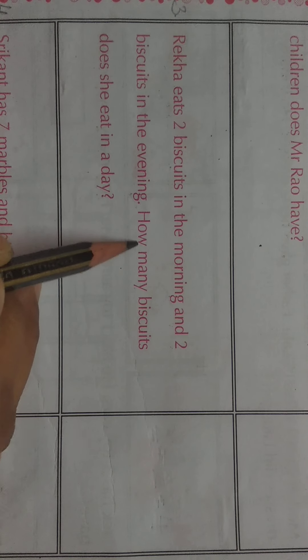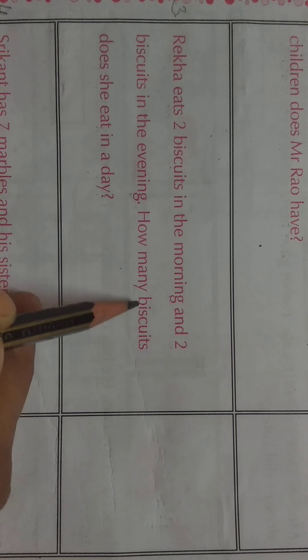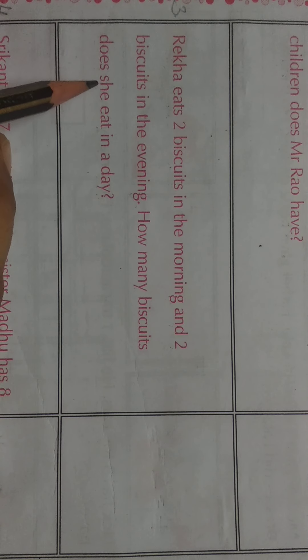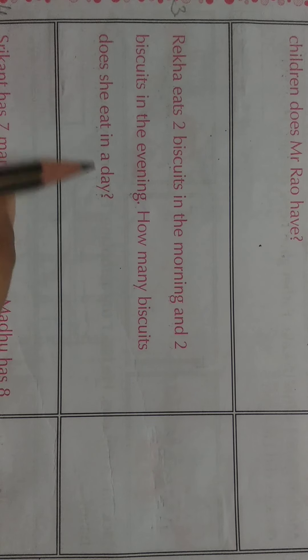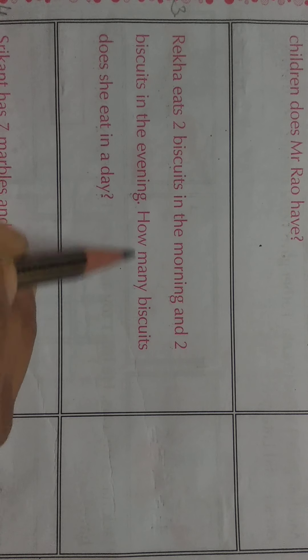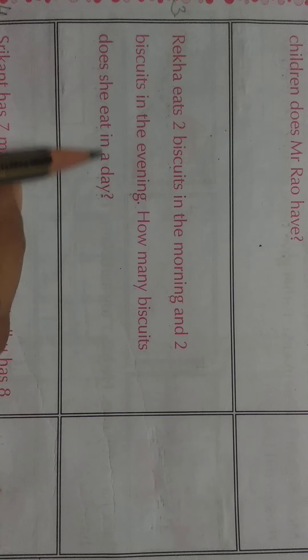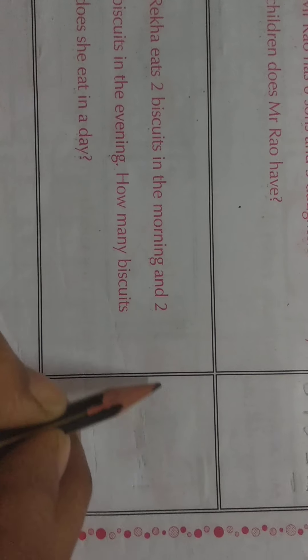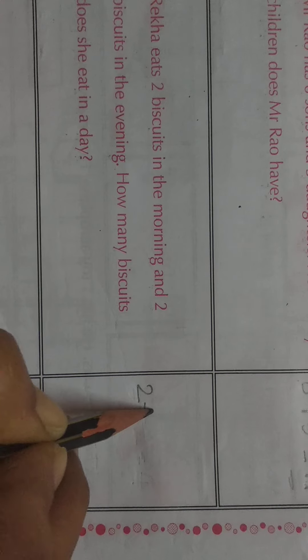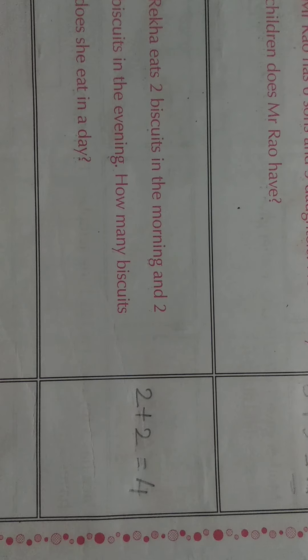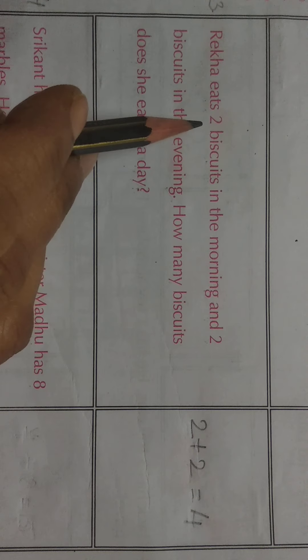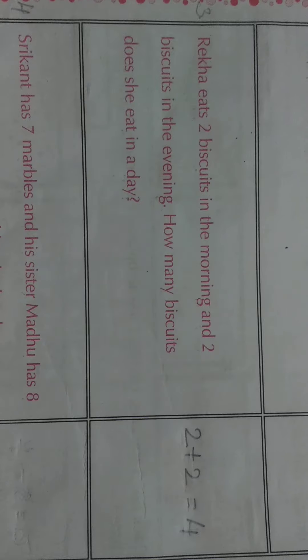So the question is, how many biscuits does she eat in a day? Pura din mein milake kitne biscuits khati hai? How many, kitne biscuits one day mein khati hai? So morning two and evening two. So the sum is 2 plus 2 is equal to 4. Morning two biscuits khati hai and evening two biscuits khati hai. So 2 plus 2 is equal to 4.